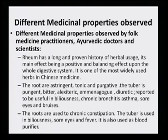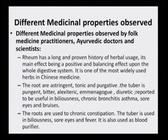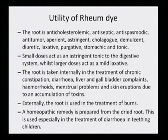The roots are astringent, tonic and purgative. The tuber is pungent, bitter, alexiteric, emmenagogic, diuretic, and is reported to be useful in biliousness, chronic bronchitis, asthma, sore eyes and bruises. The roots are used for chronic constipation. The tuber is used in biliousness, sore eyes and fever. It is also used as a blood purifier. Some more utility of rheum dye: the root is anticholesteromic, antiseptic, antispasmodic, antitumor, aperient, astringent, cholagogic, demulcent, diuretic, laxative, purgative, stomachic and tonic.